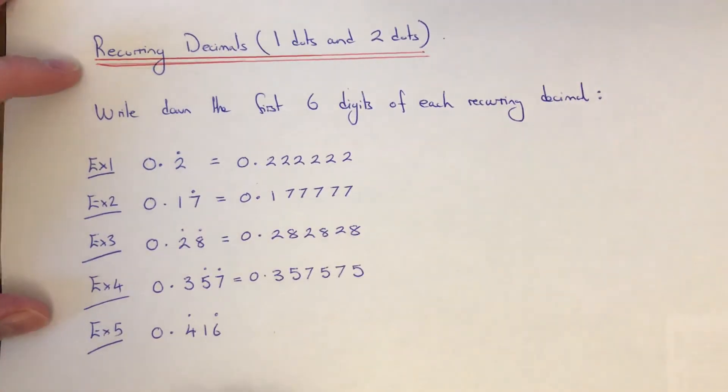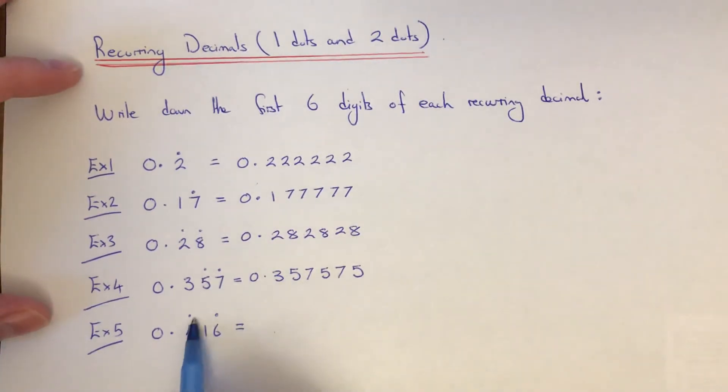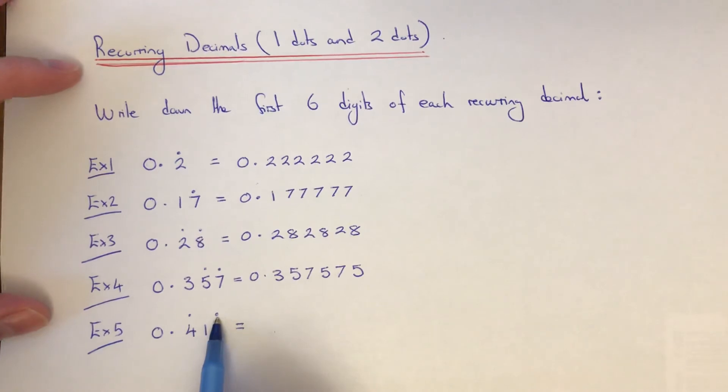Our final example: we've got a dot on the four and a dot on the six. Remember I said earlier that everything between the two dots gets repeated, so this would mean we have 0.416 and then it repeats again 416.